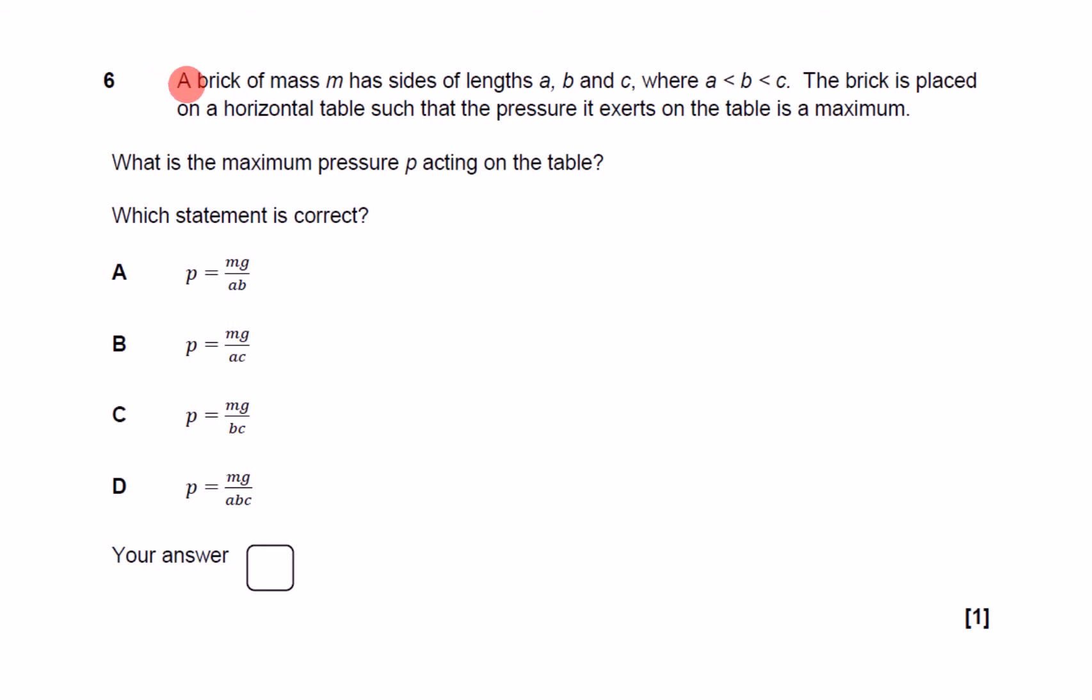Question 6. A brick of mass M has sides of length A, B and C, where A is smaller than B and B is smaller than C. The brick is placed on a horizontal table such that the pressure it exerts on the table is at its maximum. What is the maximum pressure P acting on the table? Which statement is correct?